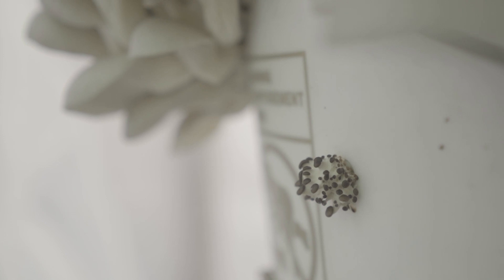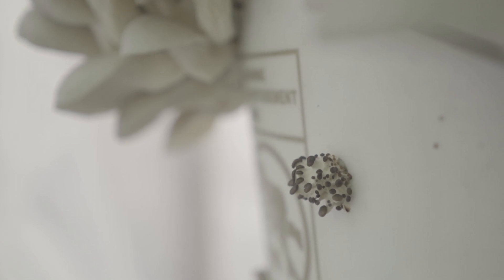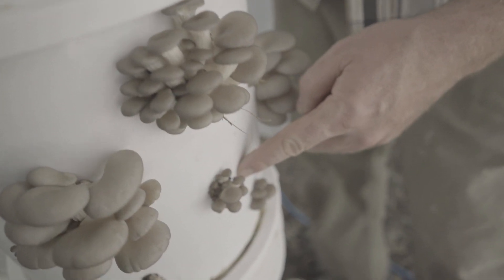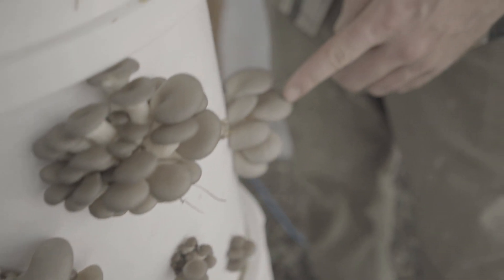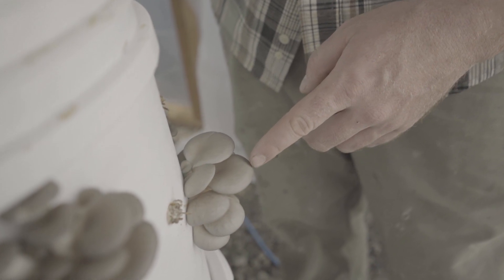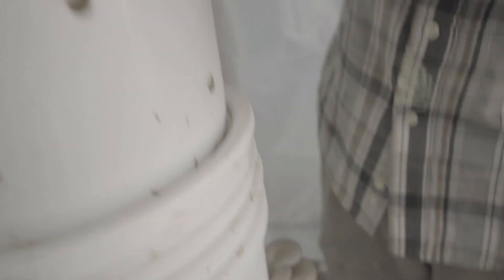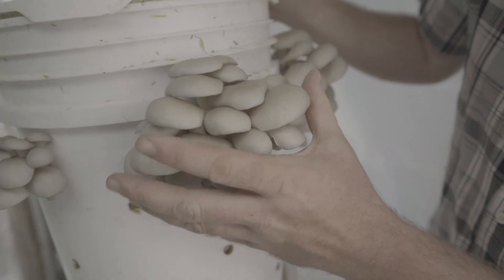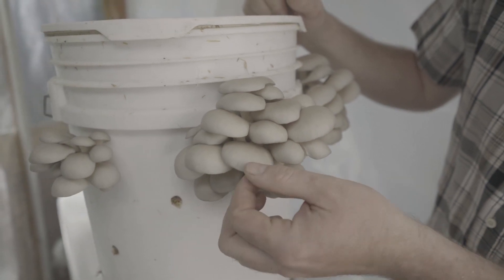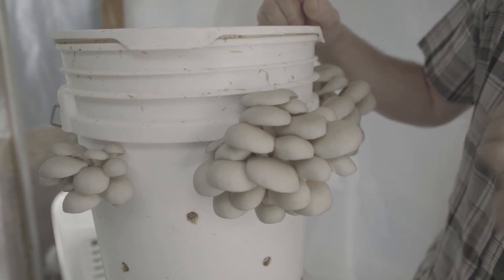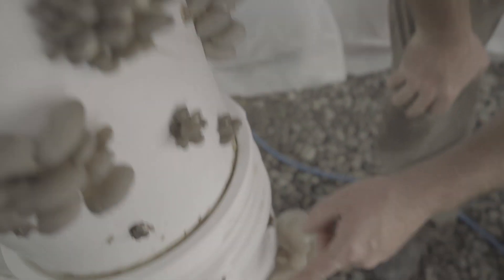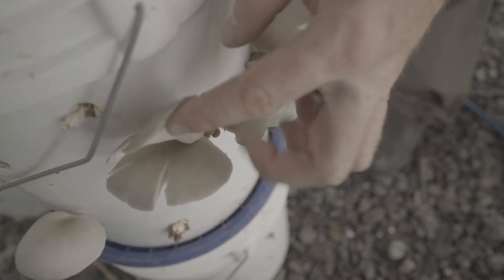At any given time in your fruiting room, you're going to have lots of different stages of growth. We have some new ones here just starting to pop out versus these, which have been growing maybe for a day. And then they continue to open and this is about where we want to harvest them, where they're still a bit curled under and still robust on the edges.